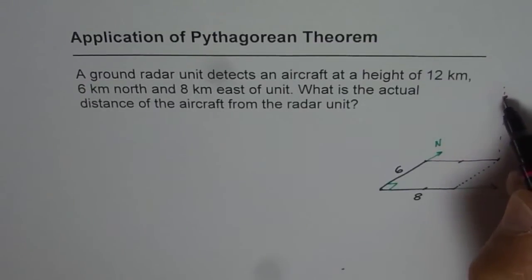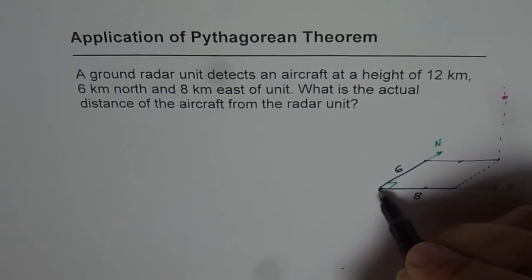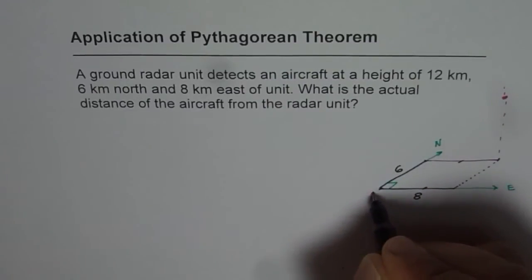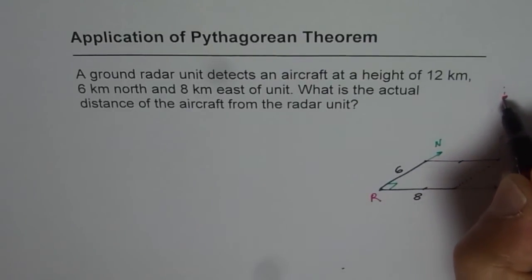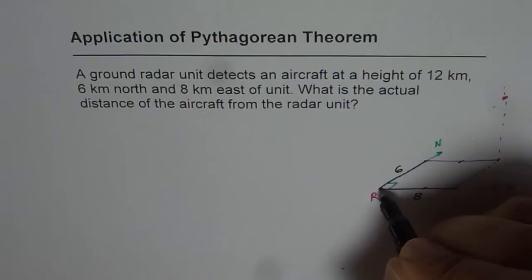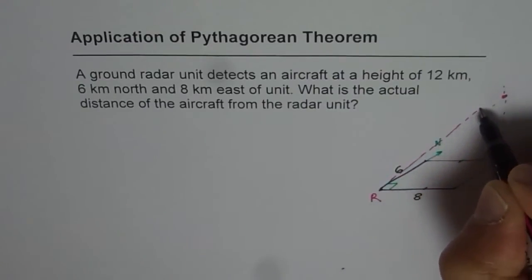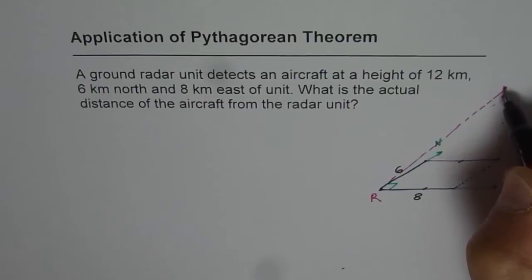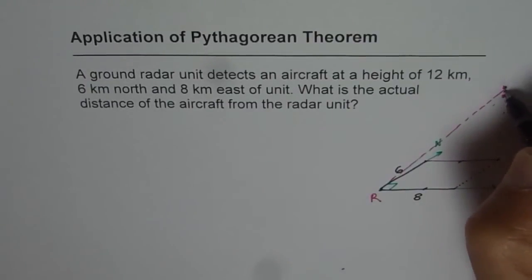So the position is right there and we have to find the distance from the radar unit. Let us say this R is the radar unit. And then connecting these two points gives us, let this be 12. So that is how the diagram is.